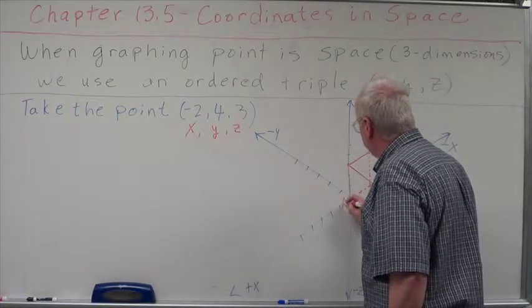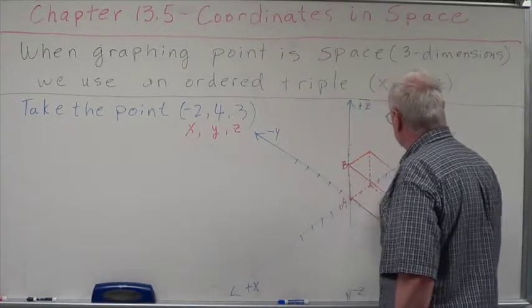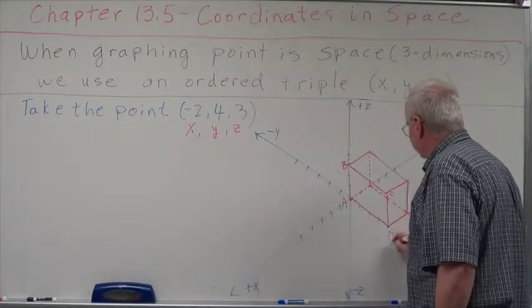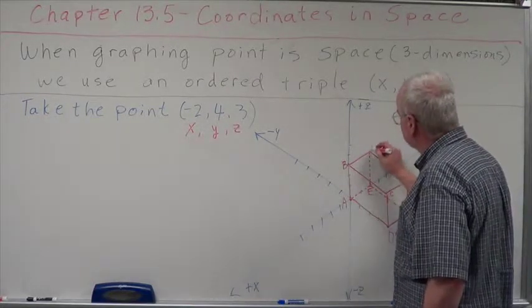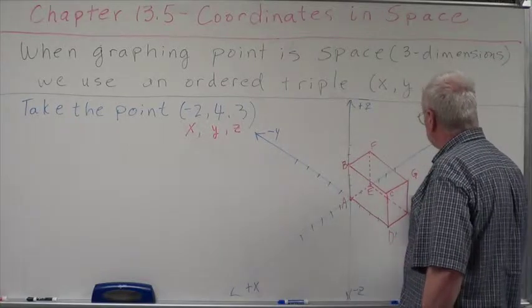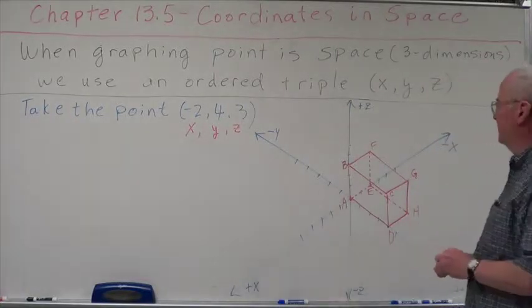That would be there. This would be here. I'm going to draw this to get a clean, nice straight line. That would be there. And this would be here. And then of course this would be here. Now let's dot the ones that we can't see. So there is our rectangular prism. Now we're going to label this A, B, this is C, this is D. This point is E, F, G, and H.